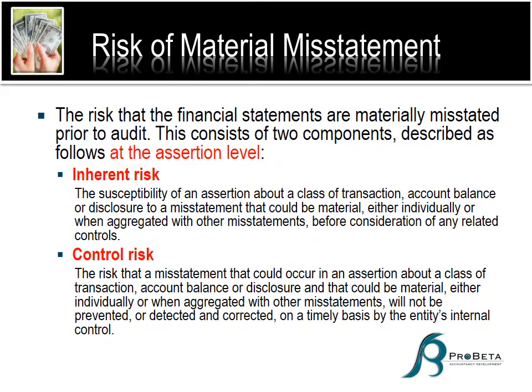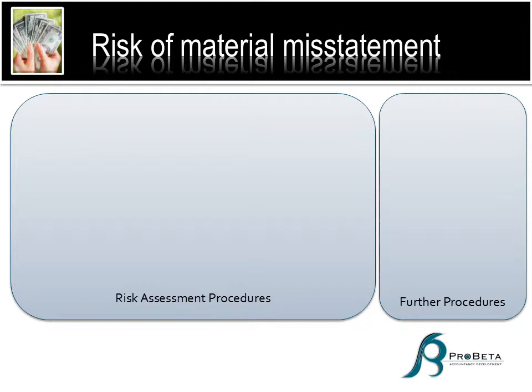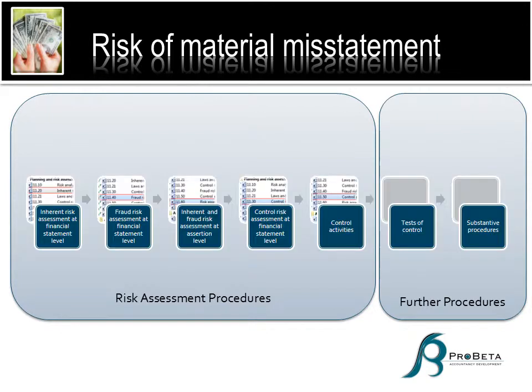Now, how is that applied in the Probe process? To explain the application, we are going to put the process on this slide — not the entire audit process. The finalization stage is not relevant to this discussion, so I'm going to leave it out. I'm only going to focus on the risk assessment procedures as well as the further procedures. Those are the two stages of the audit we're going to focus on. The first stage is basically your risk assessment at both financial statement as well as assertion level.